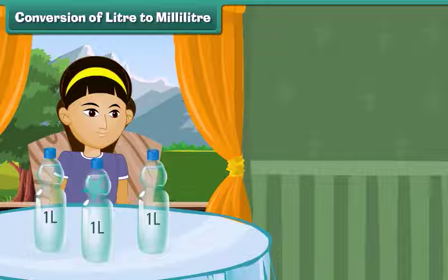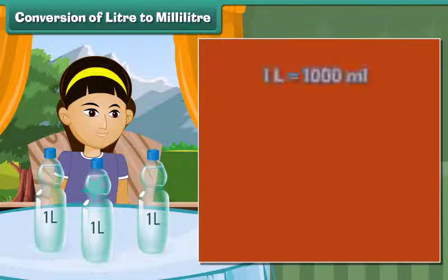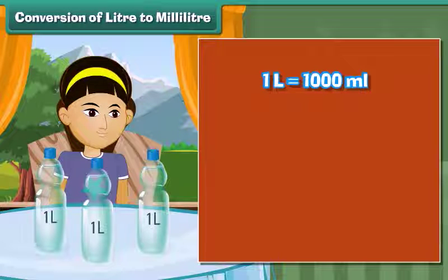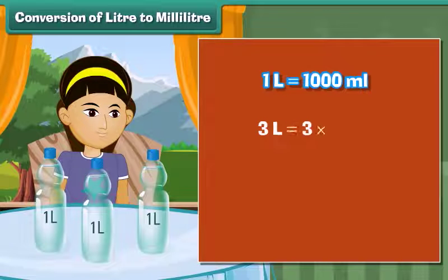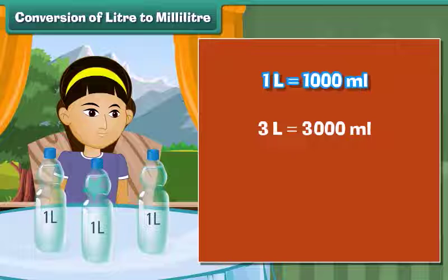Conversion of liters to milliliters: Sonam drinks 3 liters of water in a day. What is Sonam's water intake in milliliters? One liter is equal to 1000 milliliters, so 3 liters equals 3 into 1000 milliliters, which equals 3000 milliliters. Therefore, Sonam drinks 3000 milliliters of water in a day.